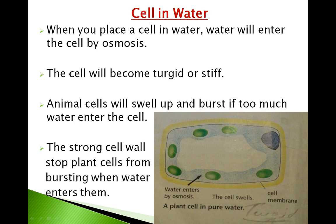The cell will become turgid — or stiff. Animal cells will swell up and burst if too much water enters the cell. However, the strong cell wall in plant cells stops them from bursting. Plant cells also have a large vacuole because the vacuole is where water is stored, and plants need more water than animals. This explains why plant cells need a strong outer cell wall surrounding the inner cell membrane.